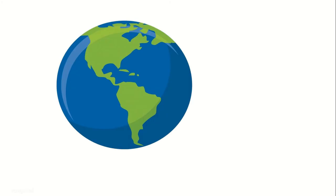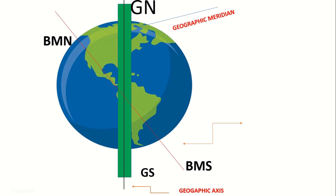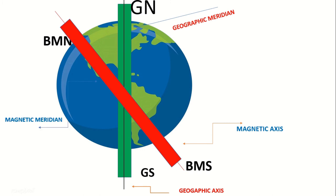Let's now visualize the declination. The line joining the north pole and south pole of the Earth is called the geographic axis. The plane which contains this geographic axis is known as the geographic meridian. When we suspend any magnet freely, it does not exactly coincide with this axis but tilts at a certain angle, which depends on the particular place where the magnet is suspended. This tilted axis is the magnetic axis, and the plane containing it is called the magnetic meridian. We define declination as the angle between the geographic axis and the magnetic axis, or the angle between the geographic meridian and the magnetic meridian.